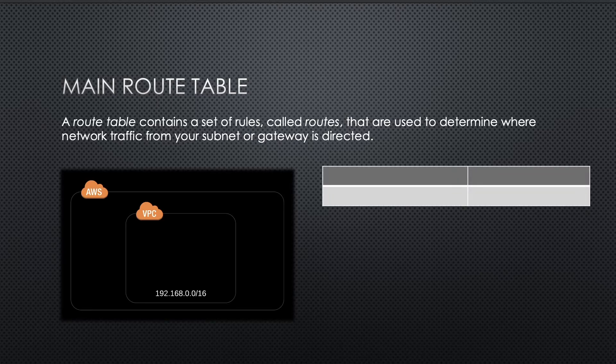A route table consists of two columns. The first column is the destination, which is the range of IP addresses where you want traffic to go — for example, a VPC network with 192.168.0.0/16 CIDR. The second column is the target, which is a gateway, network interface, or connection through which to send the destination traffic — for example, an internet gateway, a peering connection, or local.